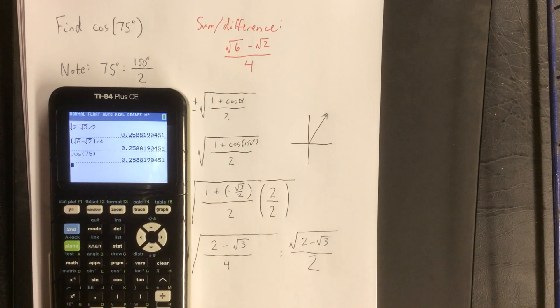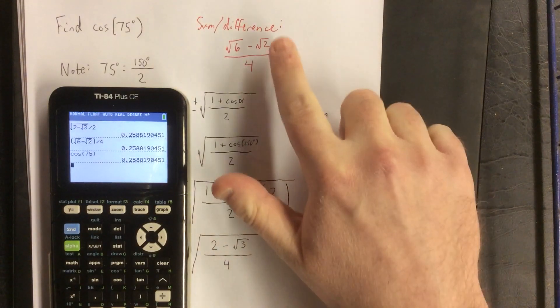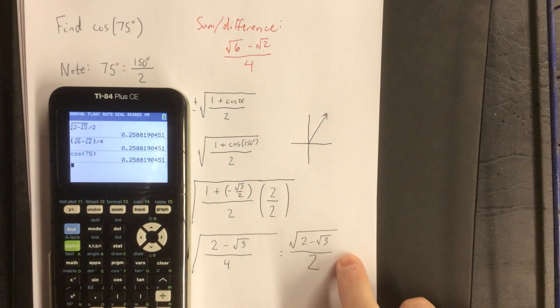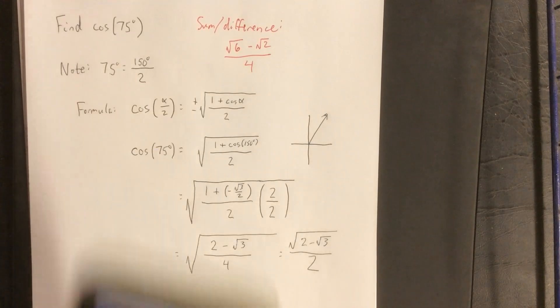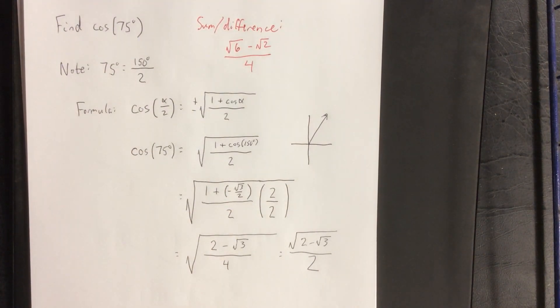So if you and a friend are both trying to find the cosine of 75 degrees, one of you tries a sum and difference identity, and one of you tries a half angle identity, it doesn't mean that either one of you is wrong. It just means that you took on a different approach. That's all.